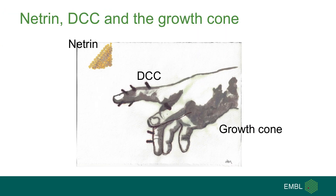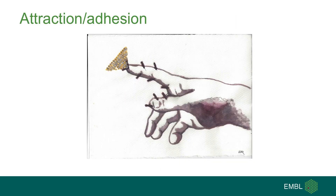Netrin comes from the Sanskrit word Netra, which means 'the one who guides.' It is a glycoprotein that guides axons as they navigate from the neuronal cell body to make connections to a distant target. Commissural axons have growth cones decorated with a receptor called DCC, which means 'deleted in colorectal cancer.' Growth cones look a bit like a hand searching for areas rich in Netrin.